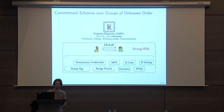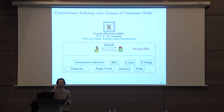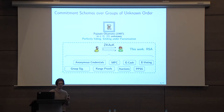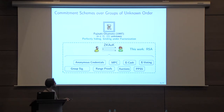This means that all those applications that directly rely on this zero-knowledge argument of knowledge also have security that reduces to the strong RSA assumption. Our contribution in this work was to revisit the security proof — specifically the witness extraction procedure — and we've shown that the same protocol can be proven secure under the standard RSA assumption instead of the strong RSA assumption. We've made no change to the protocol, so all the applications directly benefit from our improved security analysis.